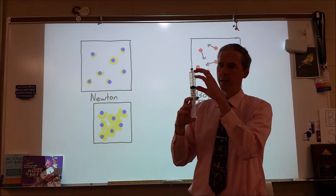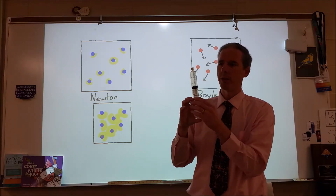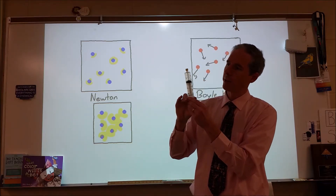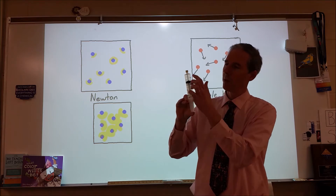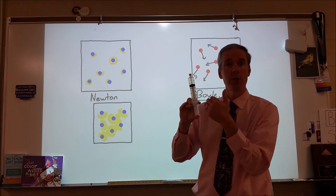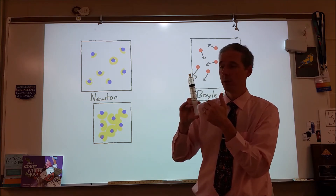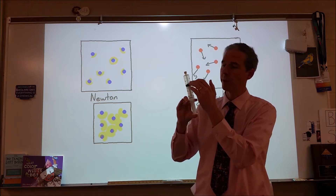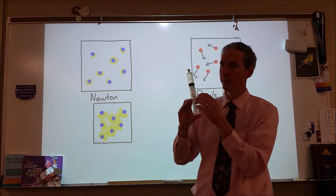If I take a gas that's 40 milliliters at a certain pressure and I compress it to 20 milliliters, the pressure of that gas inside of that syringe is now twice as high. So if there was one atmosphere to start, it's now two atmospheres.